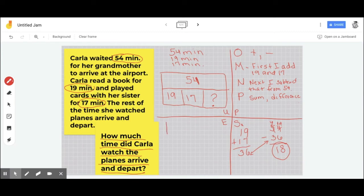Let's draw our strip diagram again. And we had 54, we had 19, 17, and then I'm going to put my 18 right there.